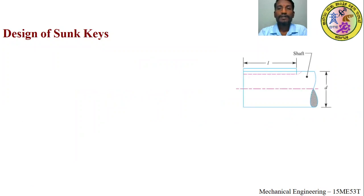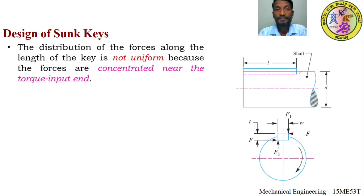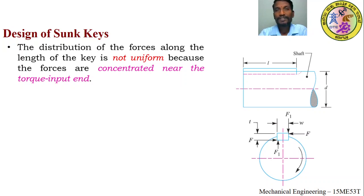Let us look at a small figure. It contains a shaft of diameter D and keyway, and the length of the key placed on the shaft. The distribution of forces along the length of the key is not uniform because the forces are concentrated near the torque input end. When torque is transmitted from one shaft to another or from shaft to hub, because of the rotation and fitting of the shaft, the forces along the shaft are not uniform.